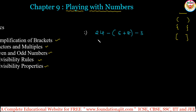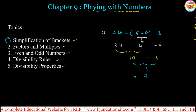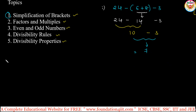Let us take the first question: 24 - (6 + 8) - 3. There is only one bracket, so we evaluate inside first. 6 + 8 = 14. Now 24 - 14 = 10, then 10 - 3 = 7. So the final answer is 7.